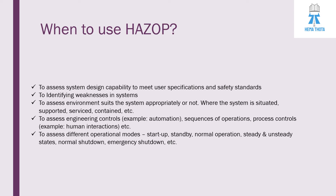When to use HAZOP: when we have a system design to assess, we need HAZOP analysis. The system design will be validated as per the user specification shared by the customer and as per safety standards. The second use is to identify weaknesses in the system, and to assess the operating environment — whether it suits the system appropriately, where the system is situated, supported, serviced, contained, etc. Also to assess engineering controls such as automation, sequence of operations, process controls, and human-machine interface interactions in the automotive context.